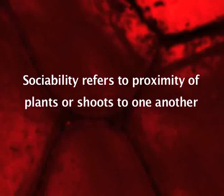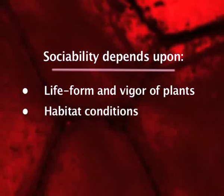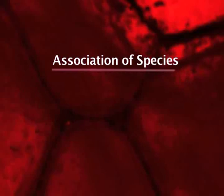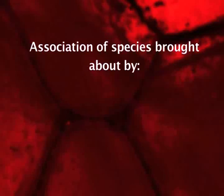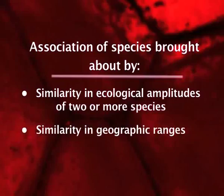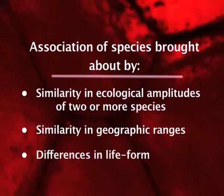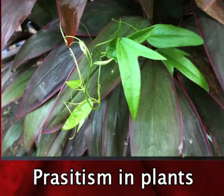Sixth qualitative character is sociability. Sociability refers to the proximity of plants or shoots to one another. It is dependent upon the life form and vigour of the plants, habitat conditions, and competitive and other relations between individuals. Seventh is association of species. Association of species is the growing together of two or more species. It may be brought about by similarity in ecological amplitudes, similarity in geographic ranges, differences in life form so that excessive competition is avoided, or dependence of one species upon another for shade or for food, as in parasites.